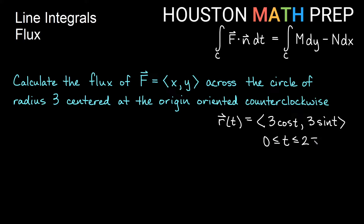The same way we did with line integrals in circulation, this parameterization tells us what x is and what y is. Our field is thought of as m comma n. So I know what m and n are, and I know what x and y are. I should be able to develop everything of m dy minus n dx from this information.